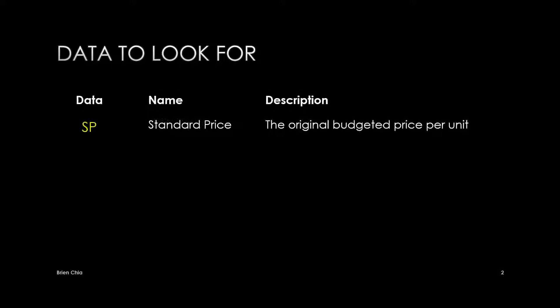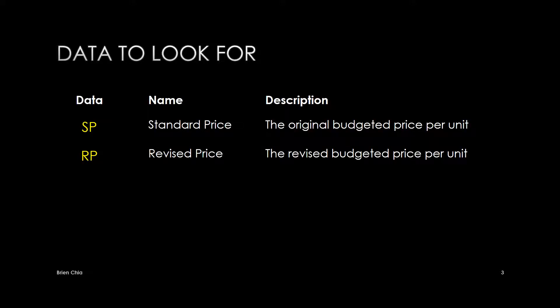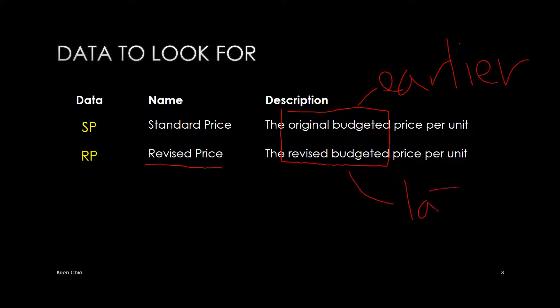Whenever we look at a question in the exam, we are looking for a set of four things. First of all, you are looking for the standard price, which is the original budgeted price per unit. The second thing is the revised price, which means there is a change between an original budget and a revised budget — two budgeted prices, one earlier and one later. The budget has been revised, so keep this in mind when looking for data.